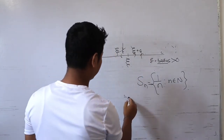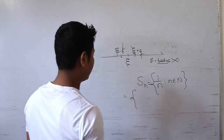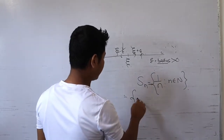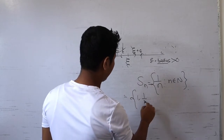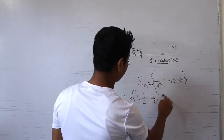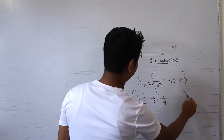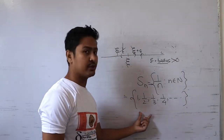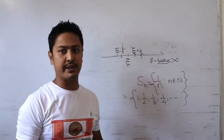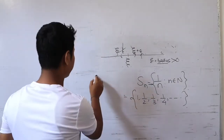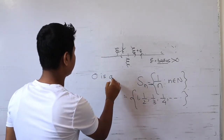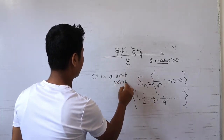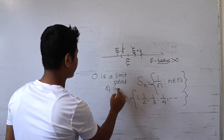The members of this sequence are: 1, 1/2, 1/3, 1/4, and so on. I am going to claim that zero is the limit point of this sequence.